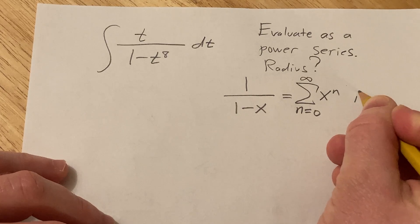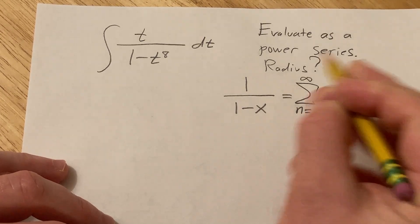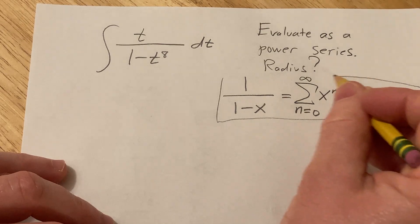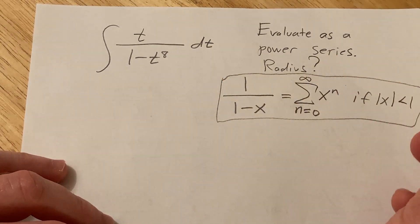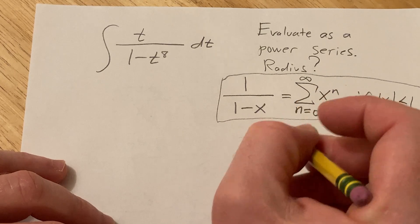And this is valid if the absolute value of x is less than 1. This is the formula that you usually have, this is given in pretty much every book and it's studied in calculus 2.